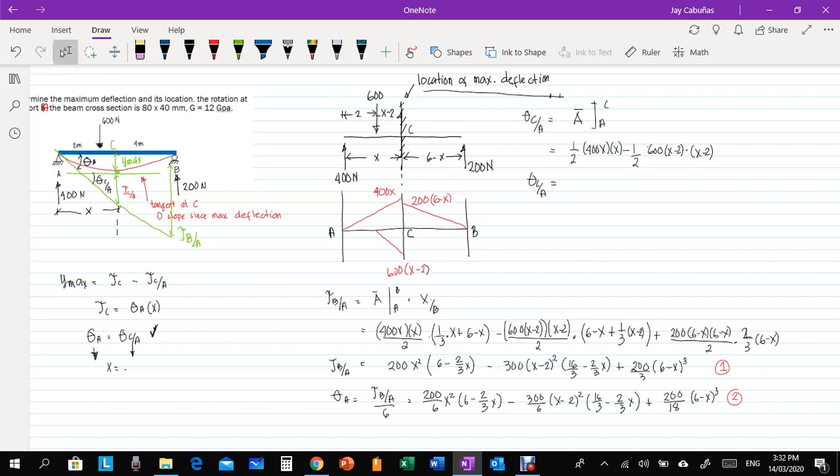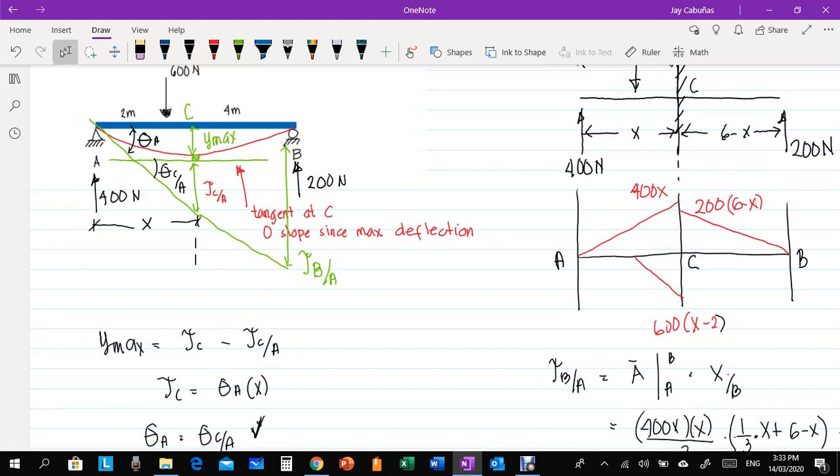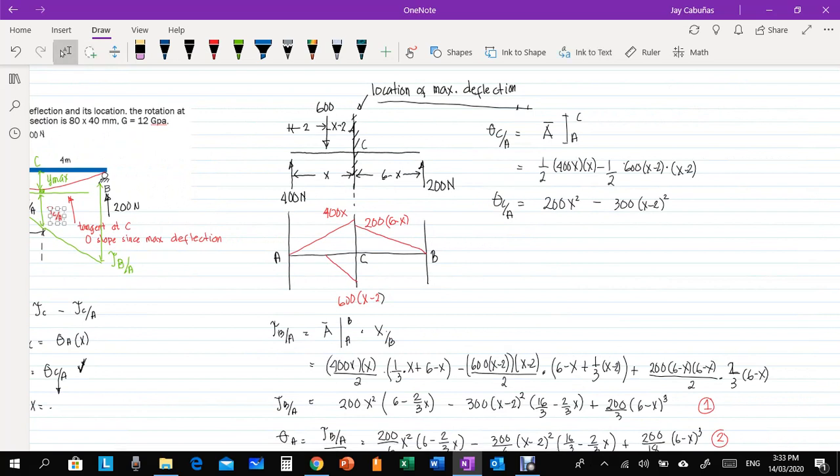Theta C A is equal to what? 1 half 400, let's say 200 already, 200 X squared minus 300 X minus 2 squared. Okay, now, compute for the deflection, compute for this one, so, that is, deflection of CA, it is just the moment area, times A to C, then, the centroid relative to C, so, that is equal to what? We have the area,